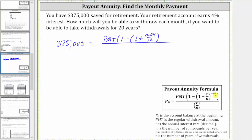And the sum is raised to the power of negative N times T, where again, N is 12. So we have negative 12 times T, the number of years of withdrawals, and you want withdrawals for 20 years, therefore T is 20. Then in the denominator, we have R divided by N, which is 0.04 divided by 12.